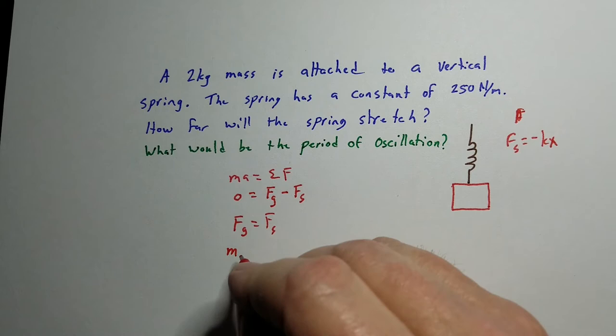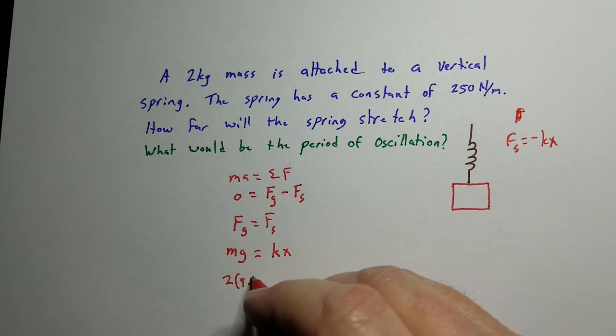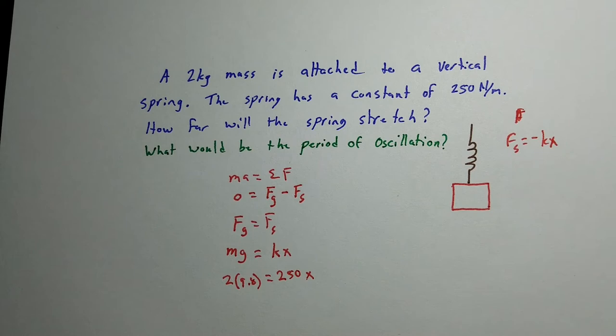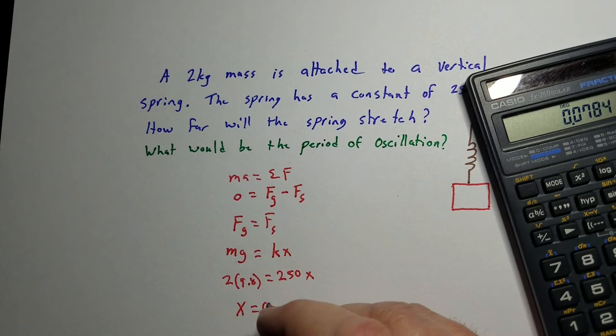So in this case here, we've got weight, which is mass times gravity, the spring force, which is kx. And then we can plug things in to figure out what's going on. So 2 times 9.8 equals spring constant is 250x. And so if we go 9.8 times 2 divided by 250, that means that spring will stretch 0.08 meters. So about 8 centimeters.